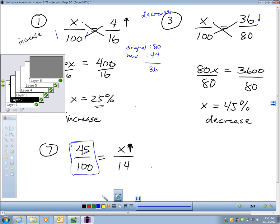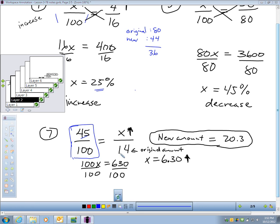So I can use cross products. I'm going to take 100 times X, which is 100X. I'm going to take 45 times 14, which is 630, and I divide each side by 100, and I get a 6.30 increase. Now, you've got to be careful on this. If you just quit here and say the answer is 630 or 6.3, you have not answered the question. The question is find the new amount. The new amount isn't 630. The new amount is to take 14, which is what you started with, and you add 630 onto it. And when you do that, you get 20.3. That's the new amount. So it's important that we actually answer the question being asked.